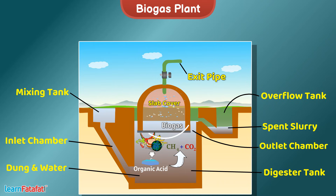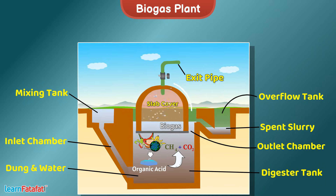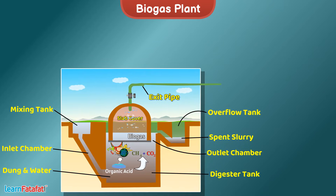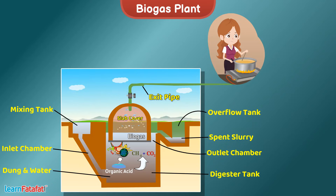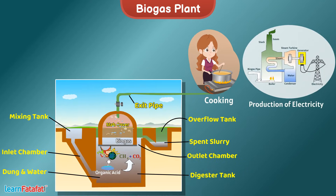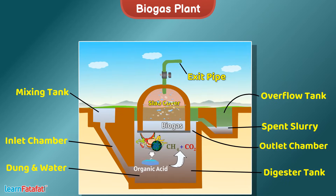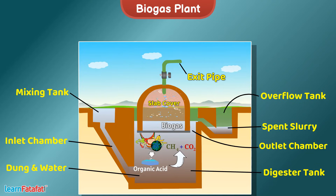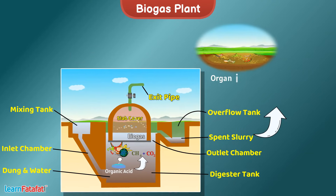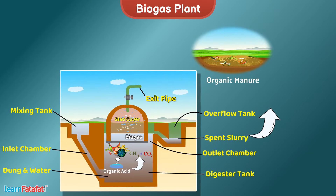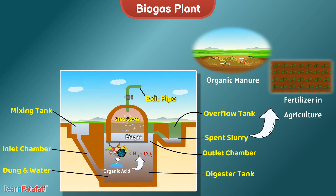The collected biogas is supplied to various places where it is used as fuel for cooking gas or for the production of electricity. The spent slurry collected in the overflow tank is used as organic manure and fertilizer in agriculture.